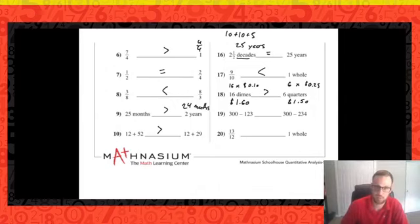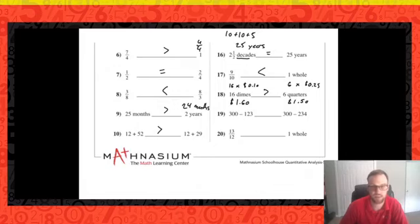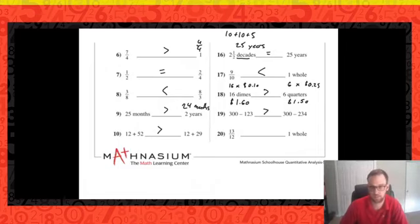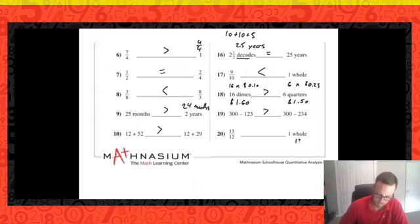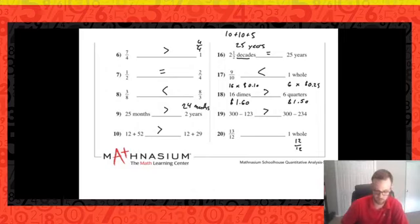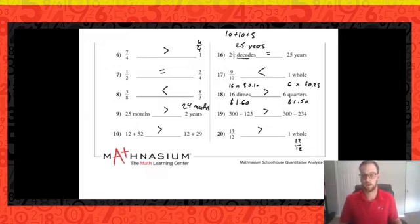Problem nineteen: 300 minus 123 versus 300 minus 234. On the left I'm taking away less from 300 — 123 is a smaller number — so subtracting less leaves a larger result. Problem twenty, last one: 13/12 compared to one whole. Twelve twelfths is one whole; 13/12 is greater than 12/12. My improper fraction is greater than the whole.